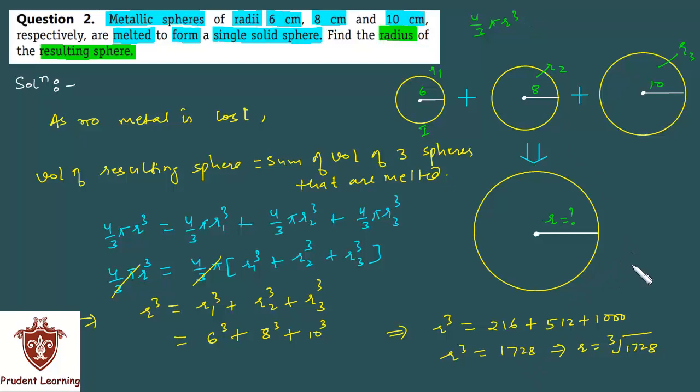So we have radius of the resulting sphere as 12 centimeter. So this completes our solution. Let us see the third question of the same exercise.